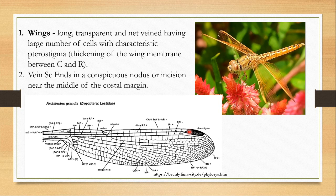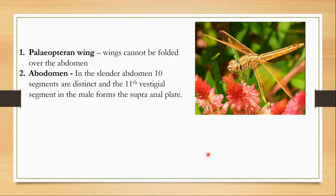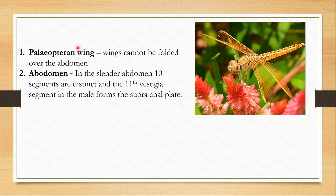The pterostigma may be absent in a few species but is mostly present in all the wings. These wings are also known as paleopteran wings because these insects cannot fold their wings against or over their abdomen. All modern-day insects other than mayflies and Odonata can fold their wings against their abdomen, but Odonata and mayflies cannot — hence they are known to have paleopteran wings.